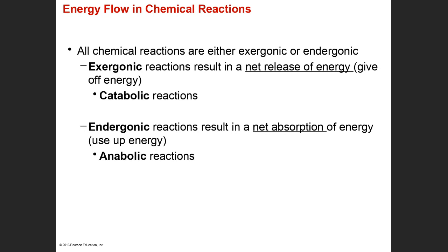So, chemical reactions. We can classify chemical reactions in terms of energy, and how we do this is that we can call a chemical reaction one of two things: we can say it is an exergonic reaction or an endergonic reaction. If the chemical reaction is classified as exergonic, what that means is we have had the breaking of chemical bonds, and that has resulted in a release of energy. Chemical bonds store energy, and whenever you break those chemical bonds, that energy that's stored in those bonds is released to the atmosphere to be used to do some kind of work.